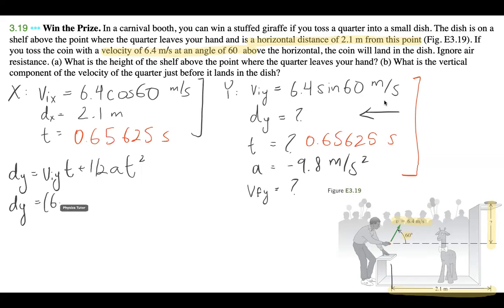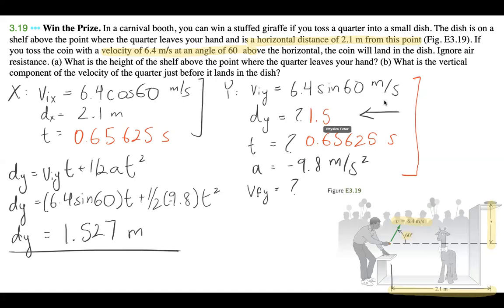And when we plug this in, we're just going to solve for dy. So it's going to be 6.4 sine 60 times time, plus half of negative 9.8 meters per second squared times t squared, right? So again, that is 0.65625. And when I plug this into my calculator, what I get is 1.527 meters. And I'm also just going to double check that right now. Yep, that's the value that I'm getting. So our dy is going to be 1.527 meters.